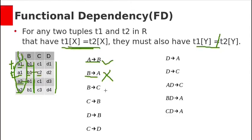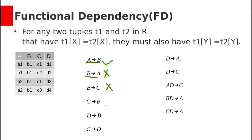Let's check B→C. For b1 we have value c1, but for another b1 we have a different value, so B→C is also not a valid FD. For C→B, we have the same C value mapping to the same D value, so C→B is a valid FD. For D→B, we have completely different D values, so D→B is also a valid FD. For C→D, rows with the same value c1, c1 are deriving two different values in attribute D, so C→D is not a valid FD.